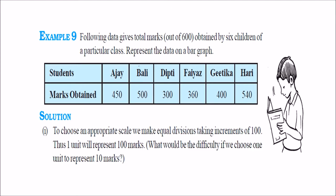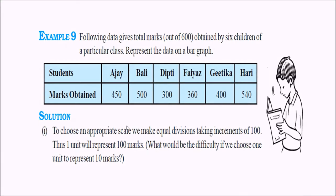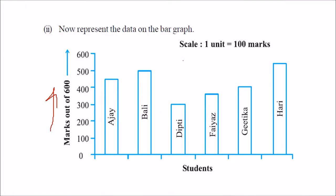Another example: Ajay, Bali, Dittti, Fayyaz, Gittika, and Hari have certain marks out of 600. To represent on a bar chart, take 0 to 600 with each unit equal to 100 marks, and represent each student as a bar. The highest marks are scored by Hari and the lowest by Deepika.